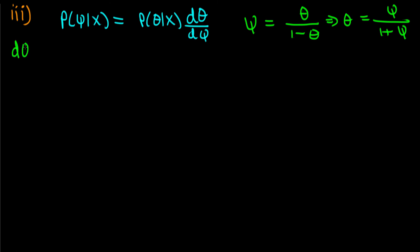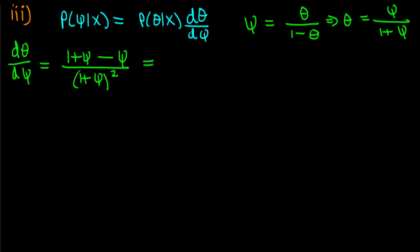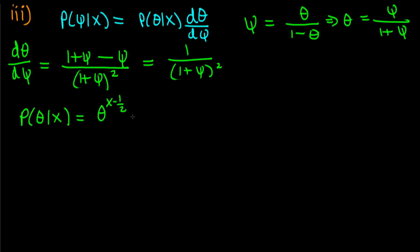Now that we have theta in terms of psi, we can work out dθ/dψ. Using the quotient rule on psi over one plus psi — v times derivative of u minus u times derivative of v, all over v squared — we get one over one plus psi all squared.